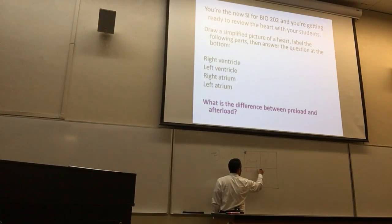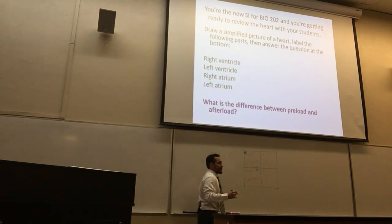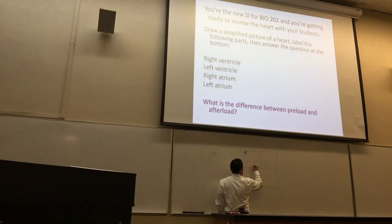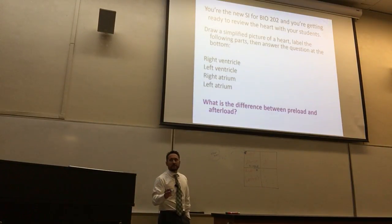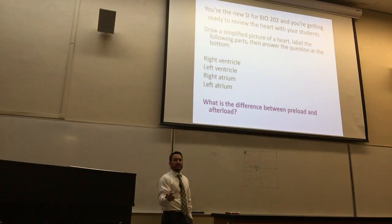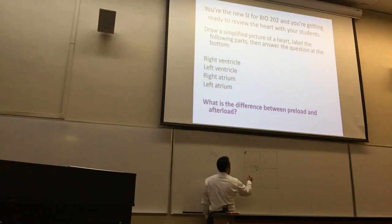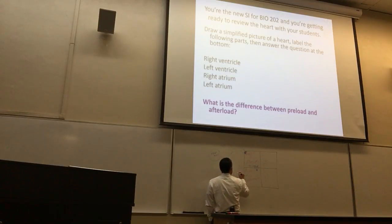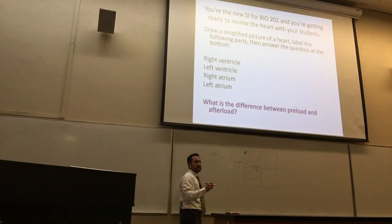Right ventricle — very good. There's a valve right here. What valve is that? That's the tricuspid valve. From the right ventricle, where does it go? Is it oxygenated at this point or deoxygenated? It's deoxygenated. So where does it go to get oxygenated? To the lungs. And what vessel takes it to the lungs? The pulmonary artery.